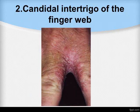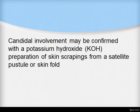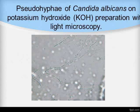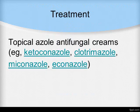The second differential diagnosis is candidal intertrigo of the finger web. Candida involvement may be confirmed with a potassium hydroxide (KOH) preparation of skin scrapings from a satellite pustule or skin fold. You can see pseudohyphae of Candida albicans on KOH preparation under light microscopy. Treatment includes topical antifungals like ketoconazole, clotrimazole, miconazole, and econazole.